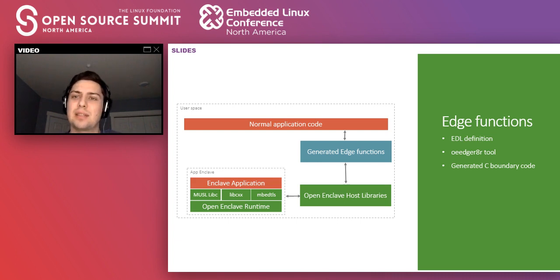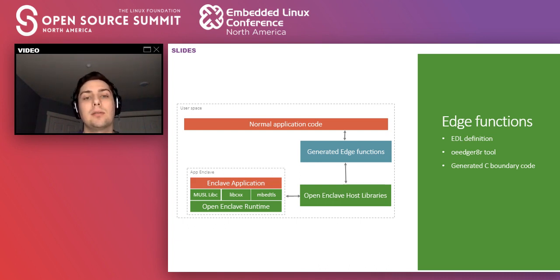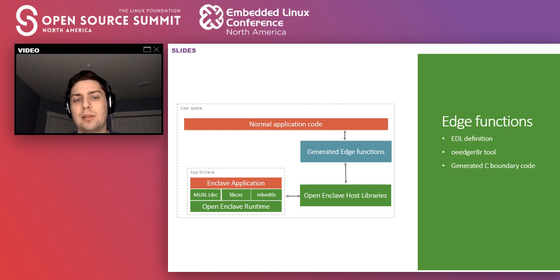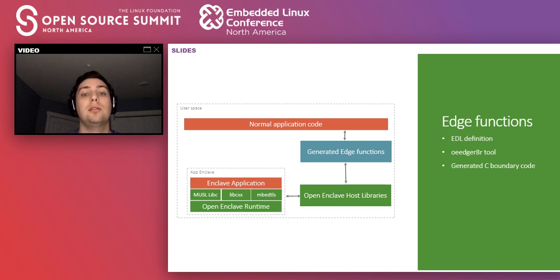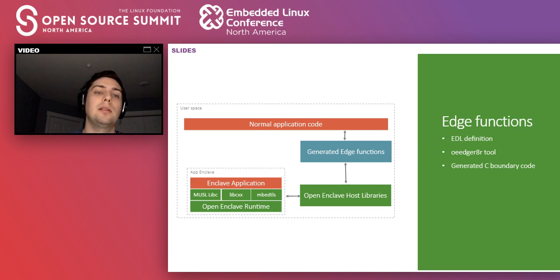The important part is that the generated glue code does a lot of things that would be easy to mess up on your own. For example, marshaling data from the host — data from the host is inherently untrusted. In SGX, you could read data directly from the host, but that leaves you susceptible to time-of-check, time-of-use attacks. The edge code will marshal data so it's copied from host to enclave. When operating on it in the enclave, you can be sure that once you've validated the data and ensured there are no dangerous pointers or potential for leaking data, it is all inside the enclave memory space.